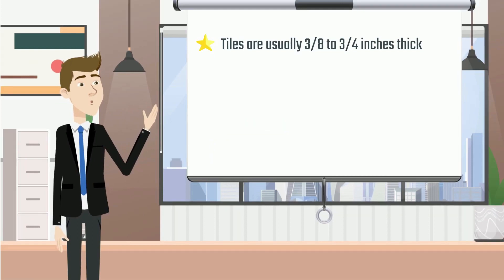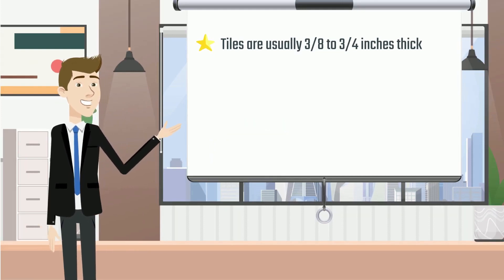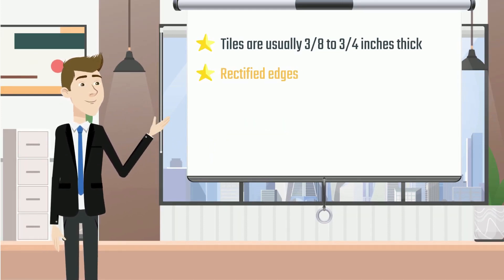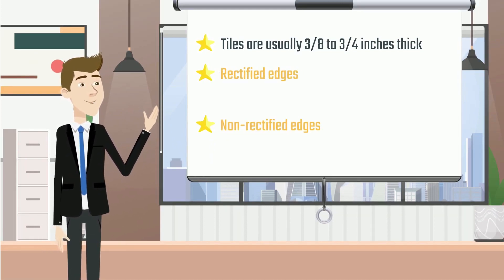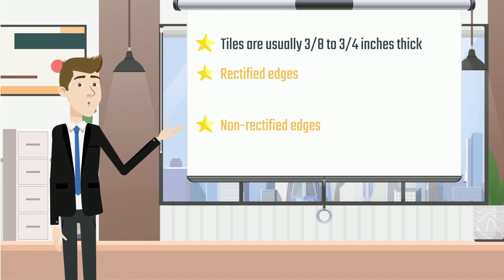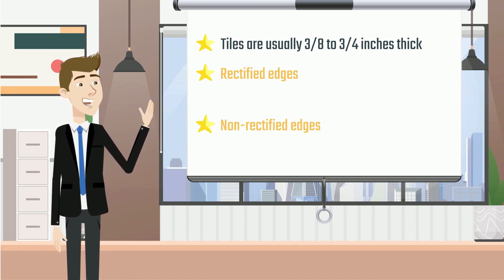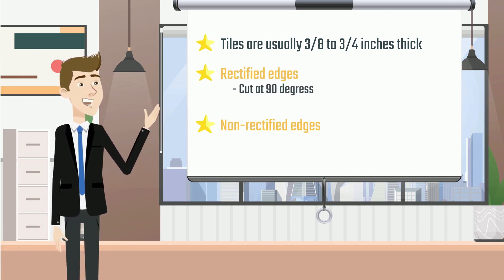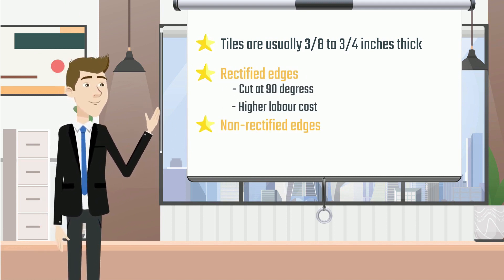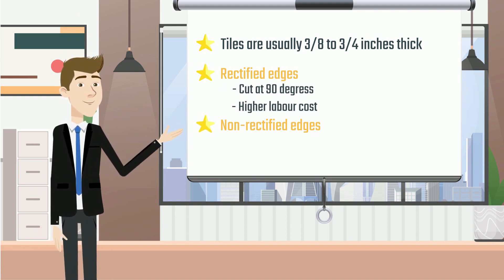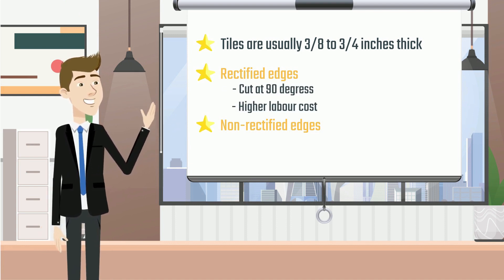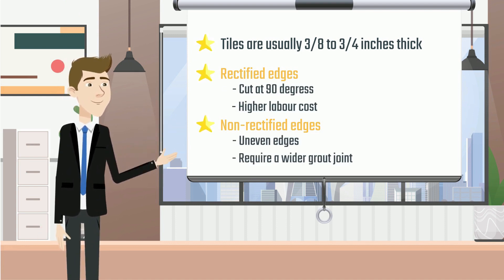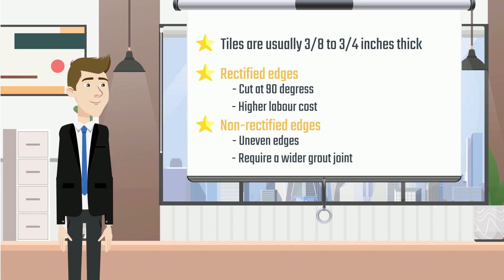Tiles are usually 3/8 to 3/4 of an inch thick and have rectified or non-rectified edges. Rectified edges are precisely cut at 90 degrees, and the cost with the labor is higher. Non-rectified tiles have uneven edges that require a wider grout joint.